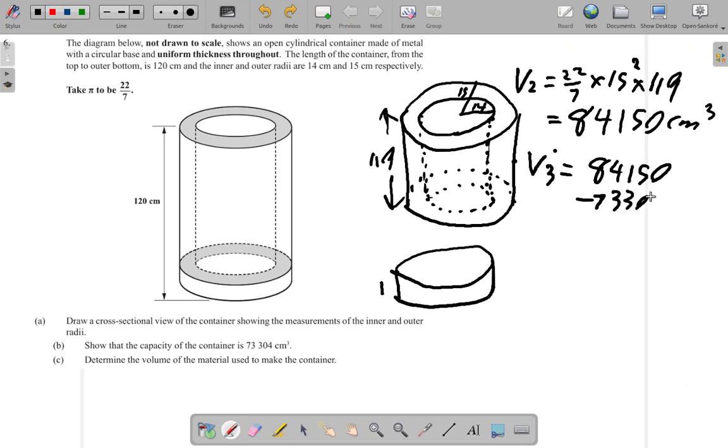Subtract them and see what you get. Minus 73,304, I am getting 10,846. Alright, and that's cm cube.